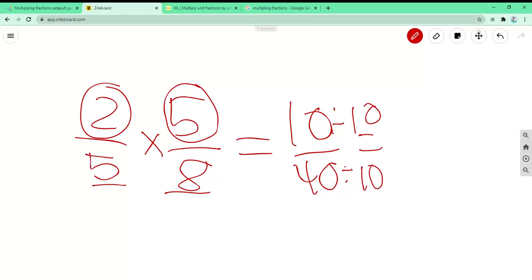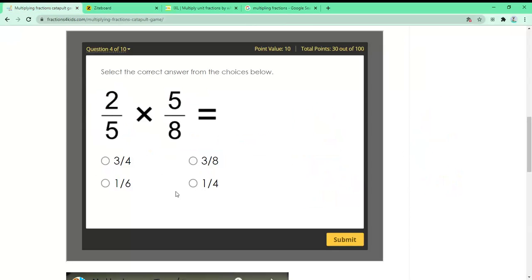So divided by 10 equals 1 over 4. So 40 divided by 10 is 4. Correct. Now let's do one more question before we end this video.